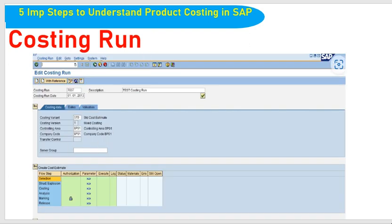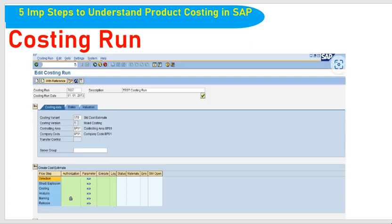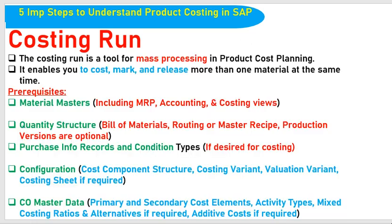Before running the Costing Run, note that this is a monthly activity. The Costing Run can only be created for one Company Code at a time. In summary, the Costing Run is mass processing in Product Cost Planning. By doing this, we can cost, mark, and release more than one material at the same time — in a single run we can enable the cost, mark, and release process.